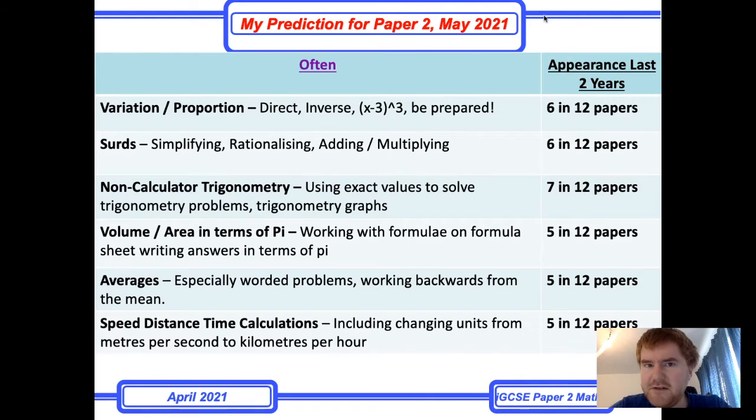Surds has dropped down into the often category. It's become a little less often on Paper 2, but still six out of 12, so do not underestimate it by any means. You need to do surd calculations—simplifying, rationalizing, adding and multiplying surds. Standard questions, still important, not as important as it was, but you still need to practice that skill.